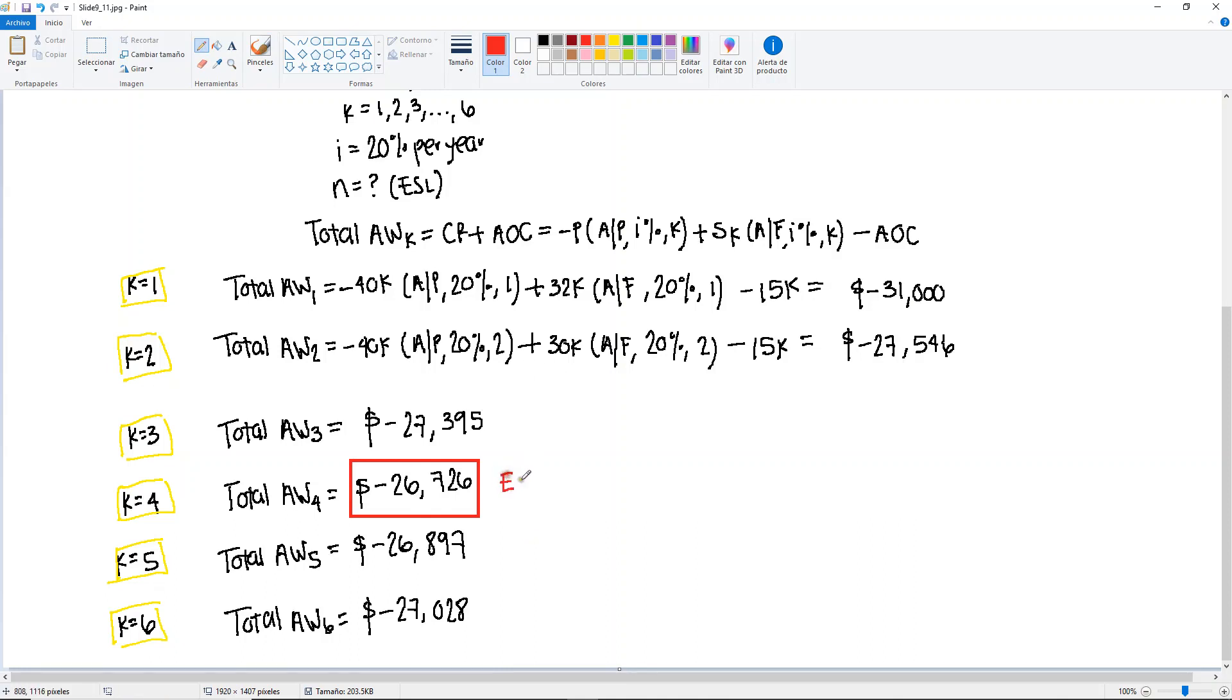So therefore, this will be the ESL, meaning that the N that we will use for this alternative will be 4 years. Our lowest point in here, that's our lowest point.